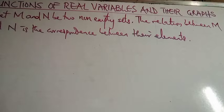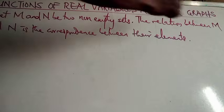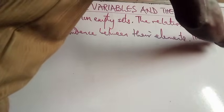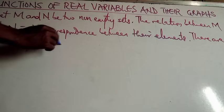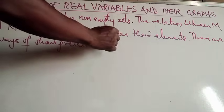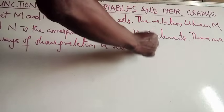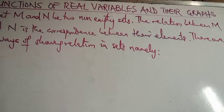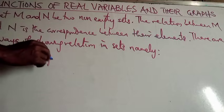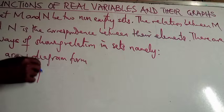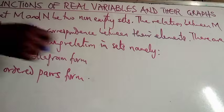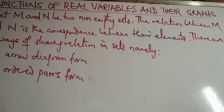As human beings exhibit different forms of relation, as we relate with one another, so also we have relations in sets. Now, there are two ways of showing relation in sets. Namely, we have the first one: the arrow diagram form, and the second one: the ordered pairs form. Those are the two ways of showing relations in sets.